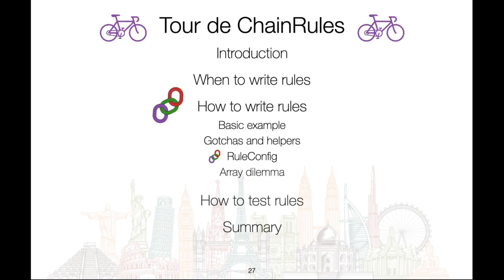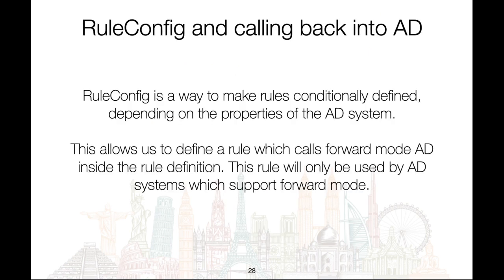Now it's time to dive into two more advanced concepts: RuleConfig and the array dilemma. Let's start with RuleConfig. RuleConfig is a way to make rules conditionally defined depending on the properties of the AD system. This allows us to define a rule which calls forwards mode AD inside the rule definition. This rule will only be used by AD systems with support for forwards mode; AD systems which do not support forwards mode will not see this rule.